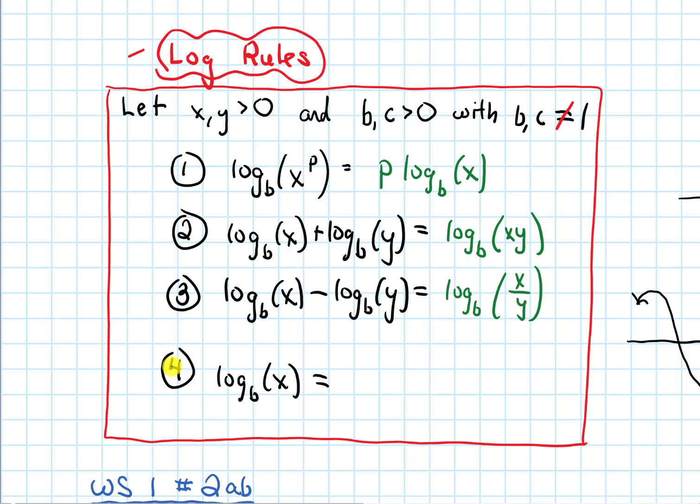And then finally this last property is called the change of base log rule, and it will let us rewrite this log, log base B of x, in terms of a different log base. So I'll get a fraction and on the top I'll get a log and on the bottom I'll get a log, and I can make the base of the log whatever I want as long as I pick the same base on the top and on the bottom.